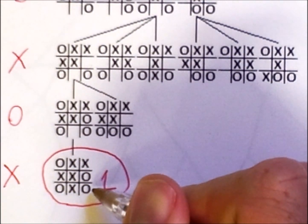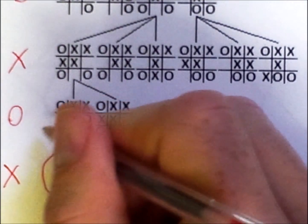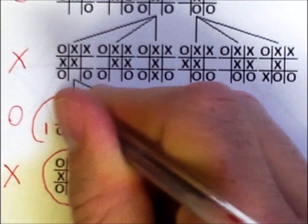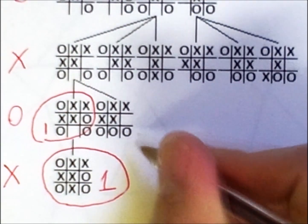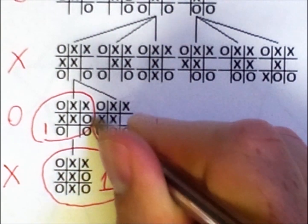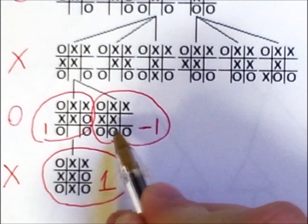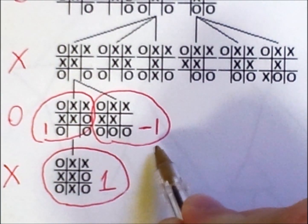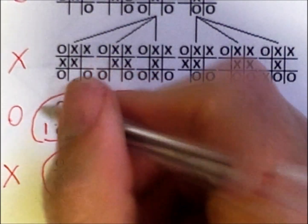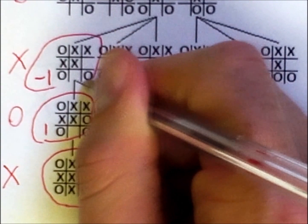So this value of 1 is the only option from here, and therefore it is also the value of this state. Now, o wins in this state, so it has a value of negative 1. And because o is picking the move here, it picks the minimum of these two values. So the value of negative 1 propagates up to be the value of this state in the tree.